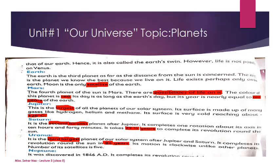The fourth planet from the Sun is Mars, which we call Marikh. There are possibilities of life on it. The color of this planet is red. Its day is almost as long as an Earth day, and its year is nearly equal to two years of Earth.